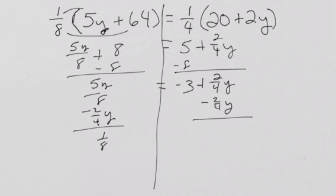So, we get one-eighth y equals negative three. And then, to get rid of this one-eighth, we can just multiply by the reciprocal on both sides. And we get y equals negative 24.